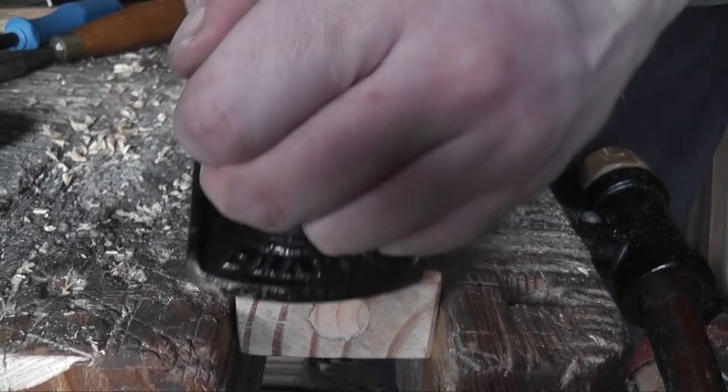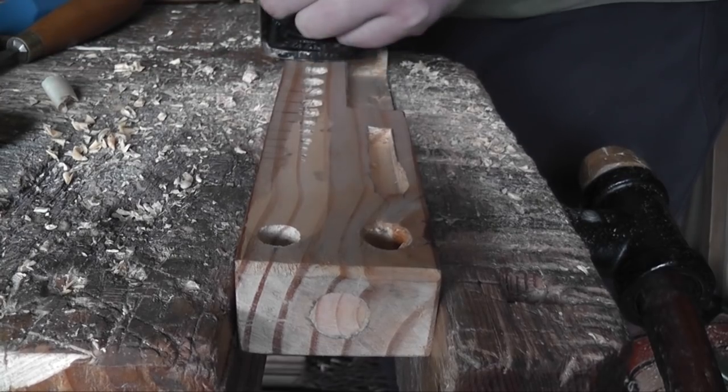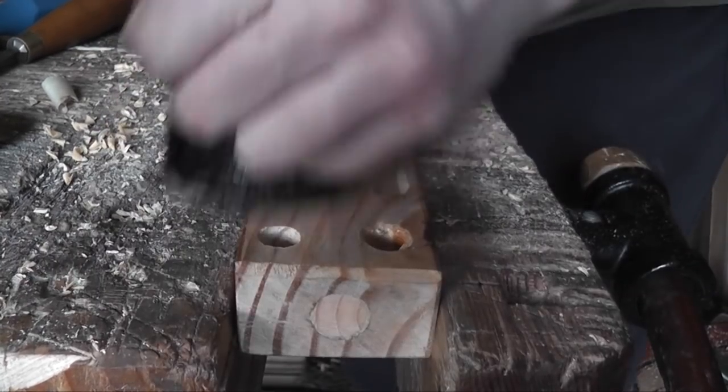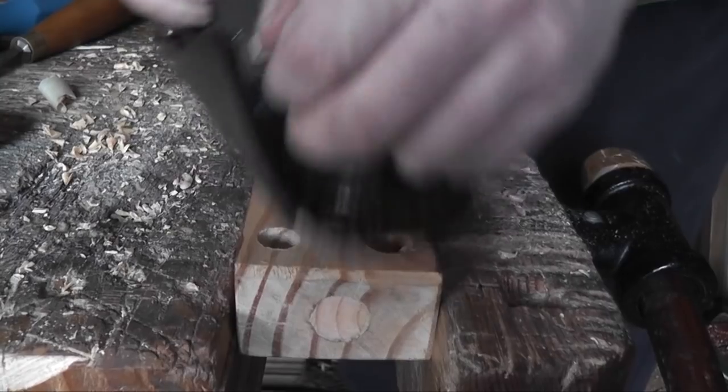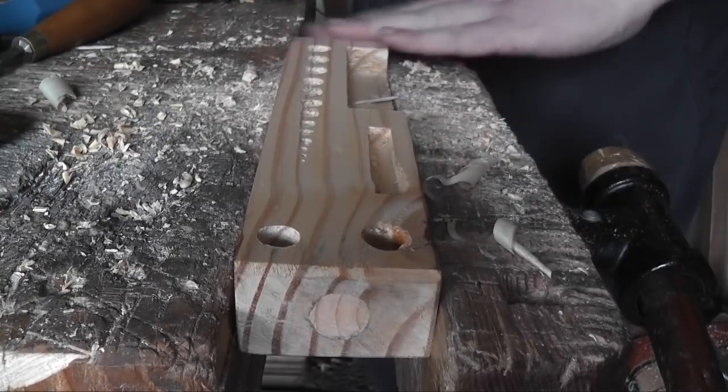I then made two little sections for my countersink tool and my Yankee screwdriver Archimedes drill. Then I lightly planed the top to get the fuzziness off, or as much as possible. There was still a lot of fuzziness on the drilled parts, but I cleaned it up a bit.